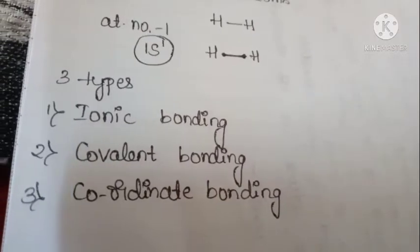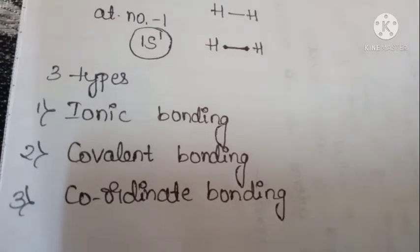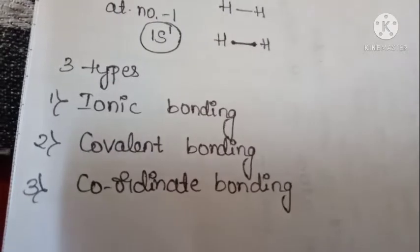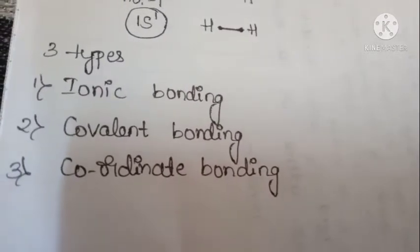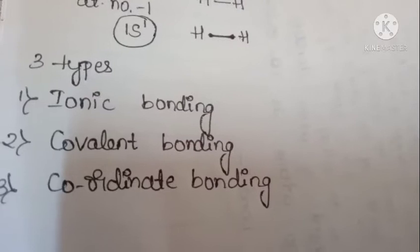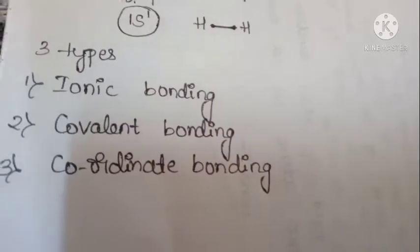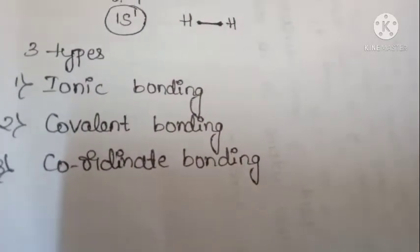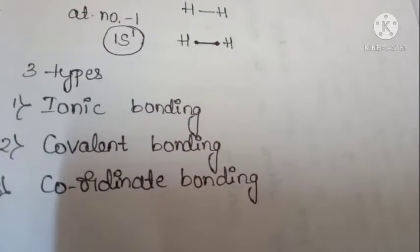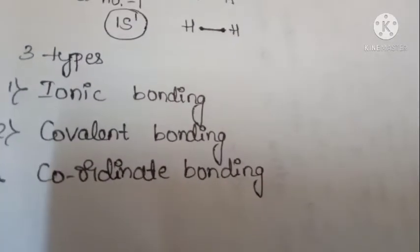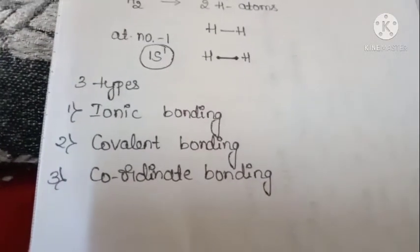Lastly is coordinate bonding. Coordinate bonding means if an atom donates a pair of electrons and those electrons are present between two atoms — which may be identical or different — it is called a coordinate bond. In addition to these bonds, we also know about metallic bond and hydrogen bonding, but these are the basic things about chemical bonding.